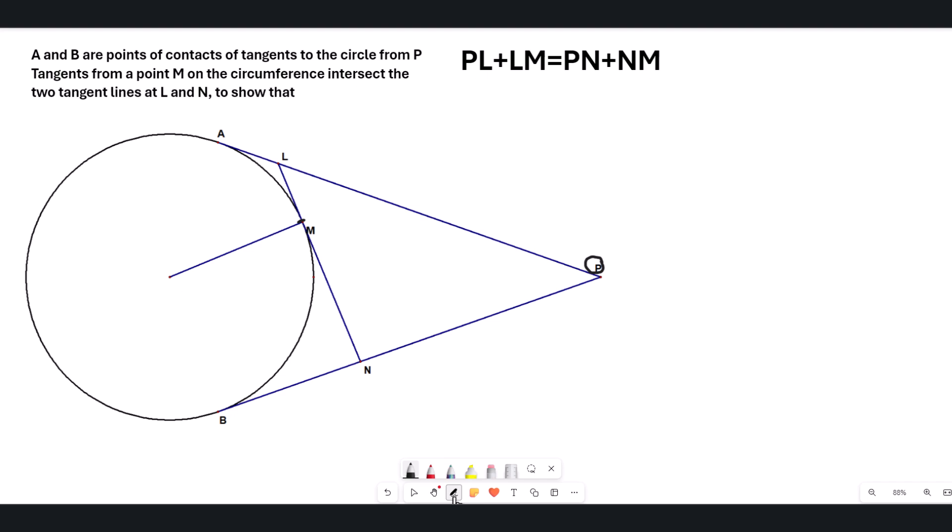And the tangent at M, it meets those two tangent lines at L and N. And so what we have to show is that PL plus LM is PN plus NM.